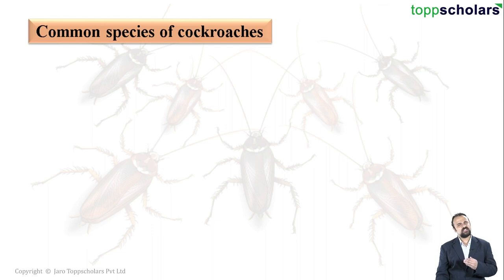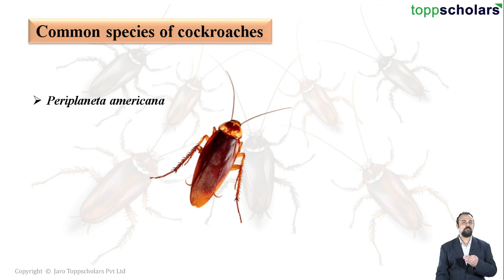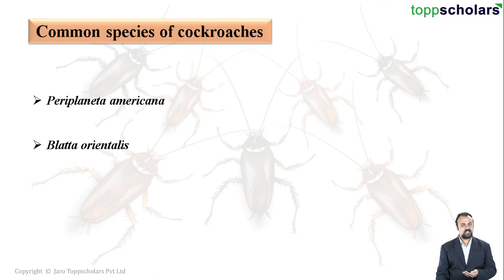Let us see some common species of cockroaches. The very first one is Periplaneta americana, which is the most dominant and most common species of cockroach found in India. Next we have Blatta orientalis, and then the German cockroach, known as Blatta germanica.